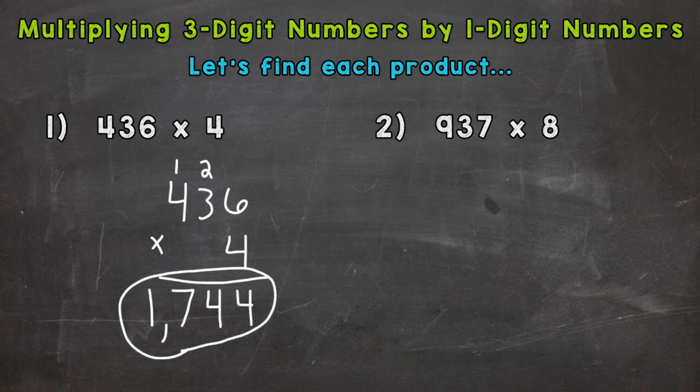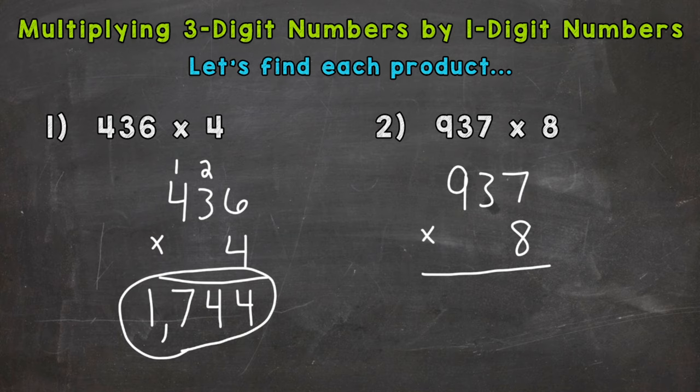So on to number 2 where we have 937 times 8. So the first thing we need to do is set up the problem. 937 times 8. Remember line up your places so the 7 and 8 are lined up because they're both in the ones place. Now we're ready to multiply.